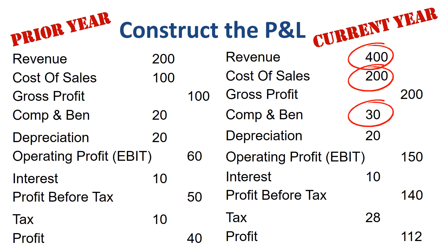Cash paid to employees often equals the total compensation and benefits booked in the P&L. Employees get paid in the month in which they work, unless you record expenses for bonuses and commissions that you accrue for this year but only pay next year. Interest paid usually equals the amount of interest booked in the P&L. Income taxes paid in real life rarely equals the amount booked in the P&L, but in this example it does, to keep things simple.